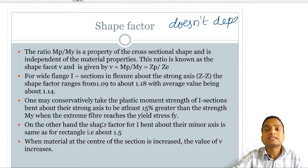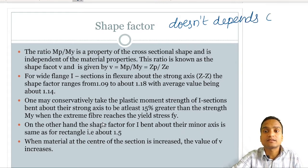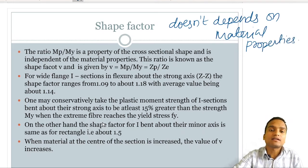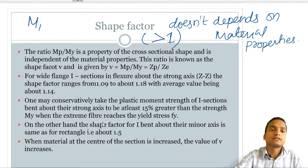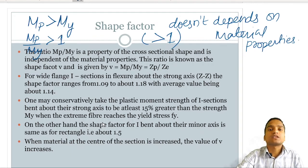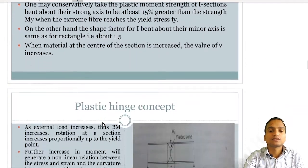The shape factor, as mentioned, is the ratio of plastic moment to elastic moment and is a property of the cross-sectional shape — it does not depend on material properties. Mp/My = Zp/Ze, and shape factor is always greater than 1 because Mp is always greater than My.